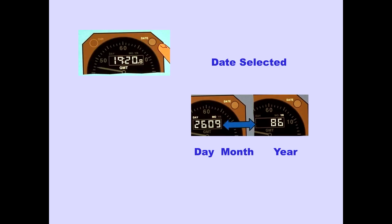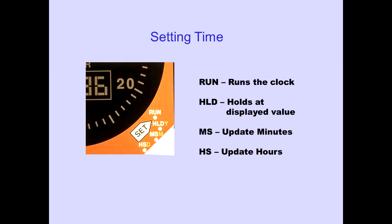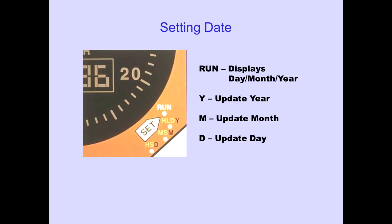Pushing the date switch displays the date; the day, month, and year are alternately displayed. The set switch is used to set desired time. If GMT is displayed, the run position runs the clock, and the hold position holds the clock at the displayed value. The minutes slew (MS) position updates GMT minutes, and the hour slew (HS) position updates GMT hours. The set switch can also be used to set desired date. If date is displayed, the run position displays day, month, and year. The year (Y) position updates the year, the month (M) position updates the month, and the day (D) position updates the day.